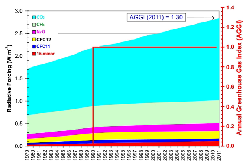The atmospheric concentration of water vapor is highly variable and depends largely on temperature — from less than 0.01% in extremely cold regions up to 3% by mass in saturated air at about 32 degrees Celsius. The average residence time of a water molecule in the atmosphere is only about 9 days, compared to years or centuries for other greenhouse gases such as CH4 and CO2. Thus, water vapor responds to and amplifies the effects of the other greenhouse gases.